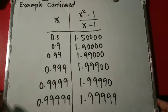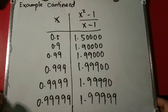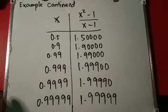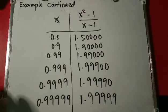Continuing the table: for x equals 0.999 we get 1.991, and so on until x equals 0.9999999, approaching 1, the value of x squared minus 1 over x minus 1 gives 1.9999. So we can see that as x gets close to 1, the value of x squared minus 1 over x minus 1 gets close to 2.